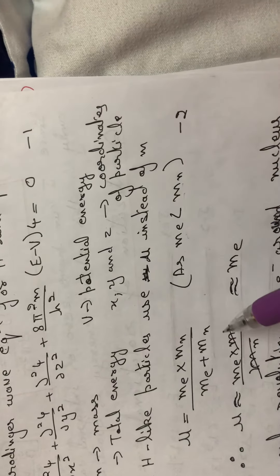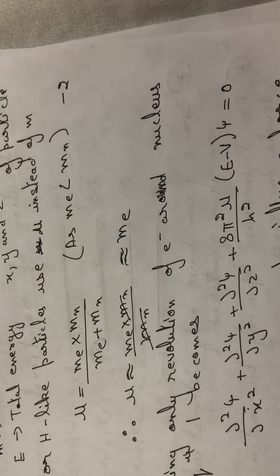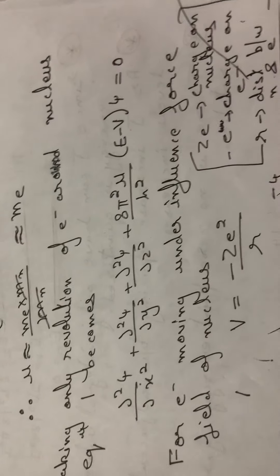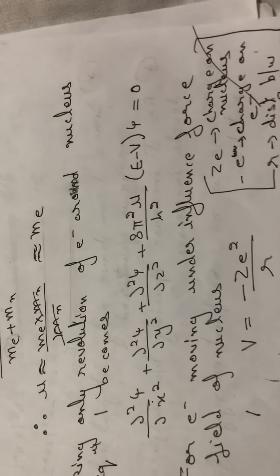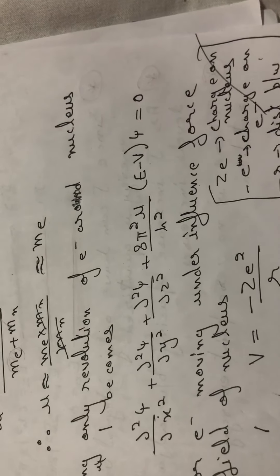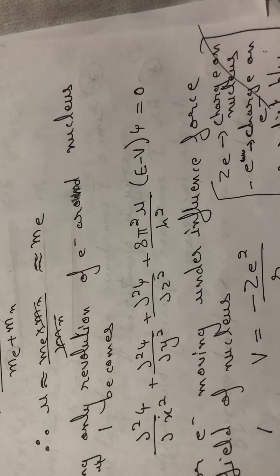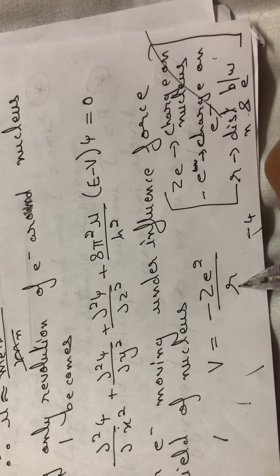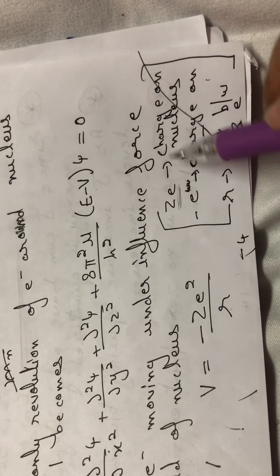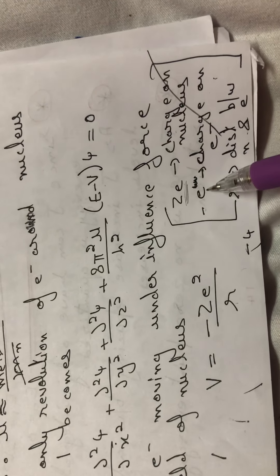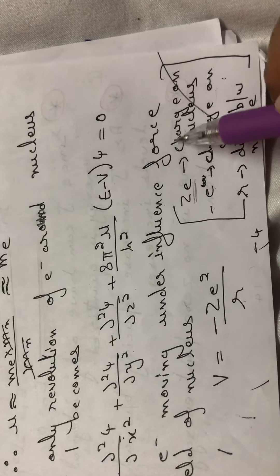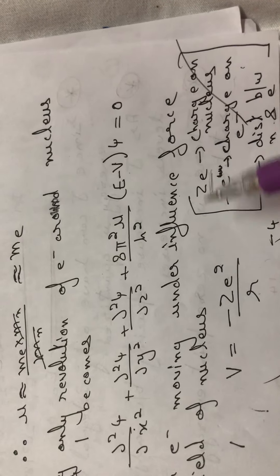Taking only the revolution of the electron around the nucleus, we find a simple expression for the potential energy. The electron is a charged particle moving under a force field. The potential energy for a charged particle moving under a force field is given by V = −Ze²/r, where Ze is the charge on the nucleus, −e is the charge on the electron, and r is the distance between the nucleus and the electron. This is the electrostatic potential.